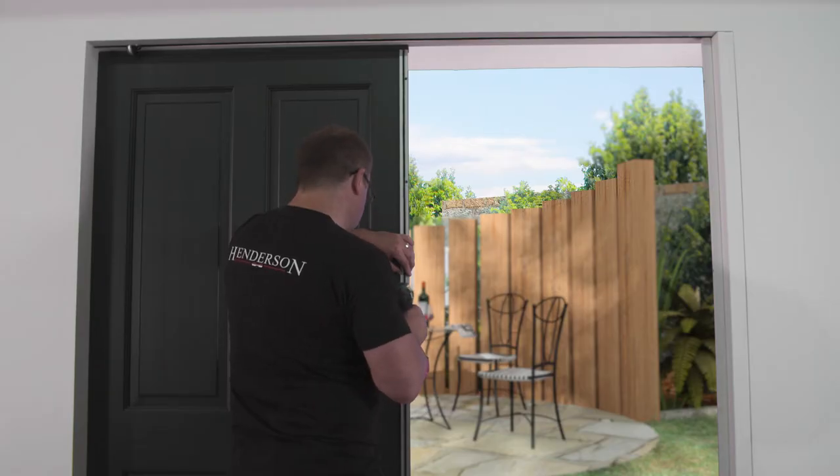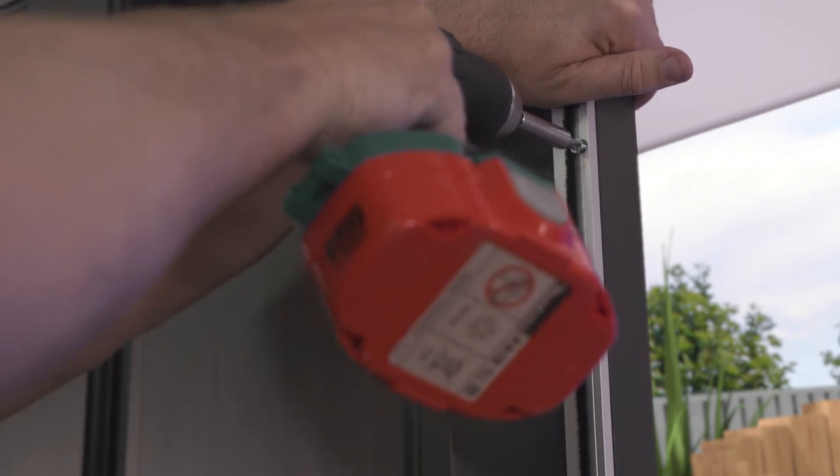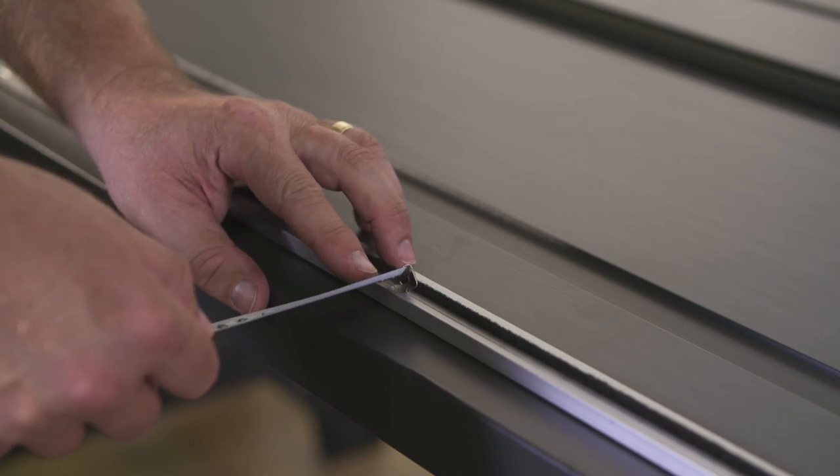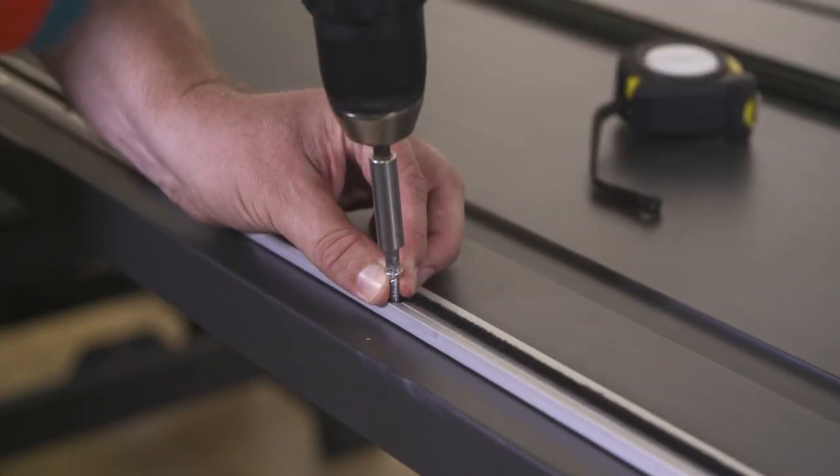Screw the interlocking profiles into position on the front facing side of the fixed panel door and the backwards facing side of the sliding door. Ensure the profiles are correctly positioned to interlock using the measurements in the instructions.